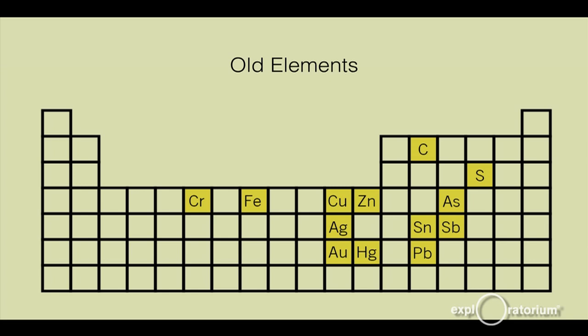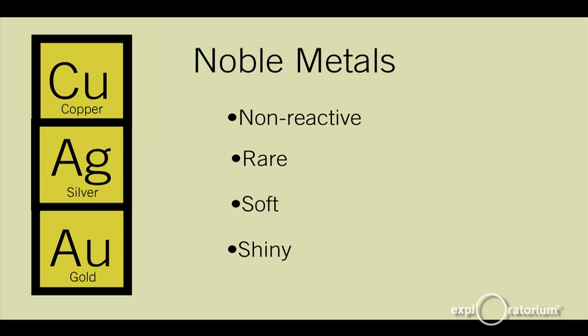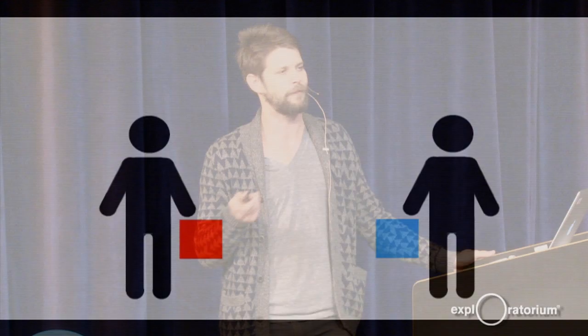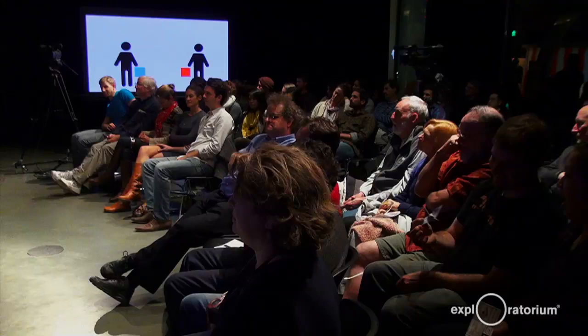There are three old-world elements that had a really interesting effect on us: Cu, Ag, and Au — copper, silver, and gold, a family known as the Noble Metals. They are fairly non-reactive, fairly rare, fairly soft as metals go, and fairly shiny. It turns out these are exactly the properties you're looking for if you're trying to invent money. Money solves an interesting social problem: suppose you and I each have a thing of equal value, but I prefer yours and you prefer mine — we can swap, and we both feel better off. This is called mutually beneficial exchange.